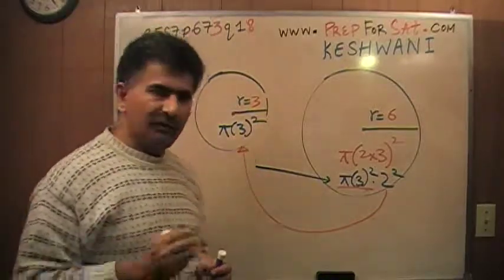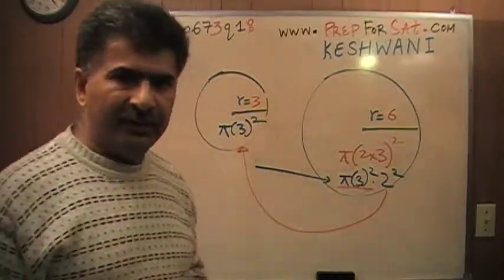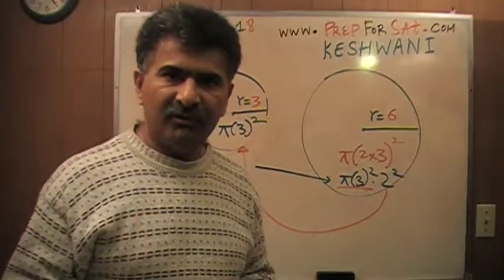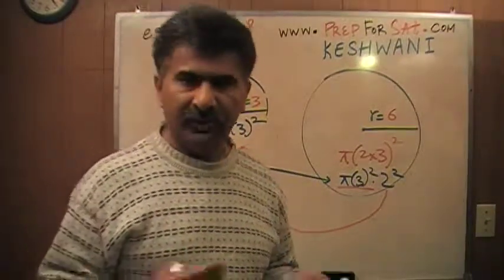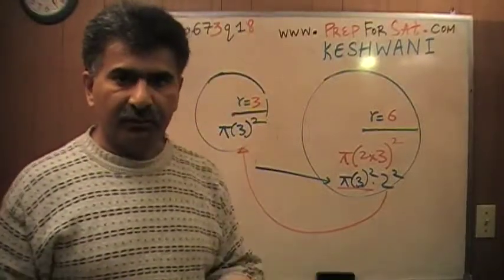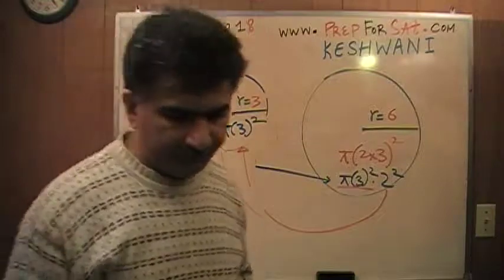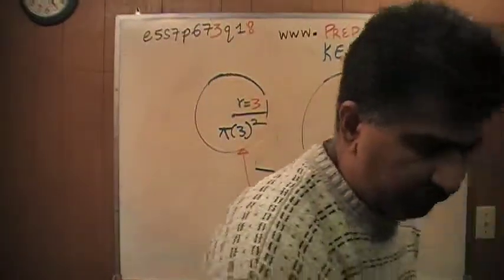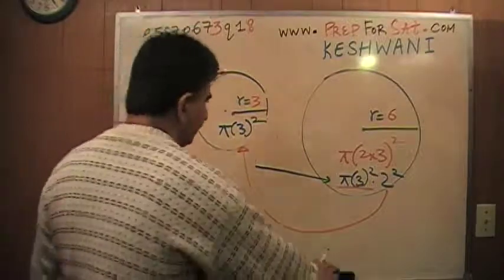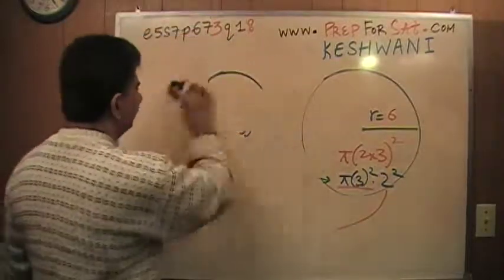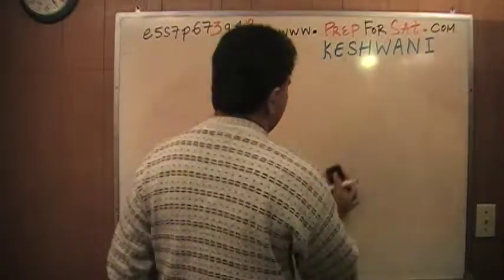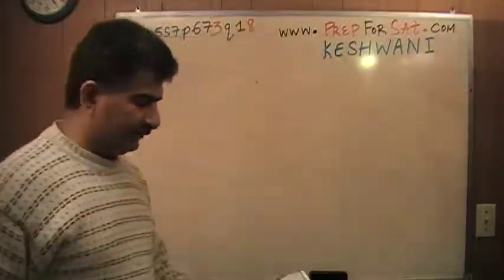It becomes four times. So if you have one circle with radius one-half and the other with radius one — which has twice the radius — the area of the large circle is four times the area of the small circle. The ratio of the area of the large circle to the small circle is four to one. The answer is D.